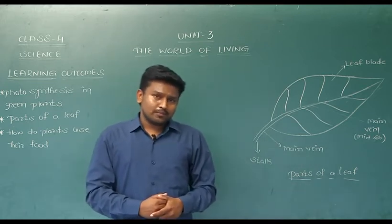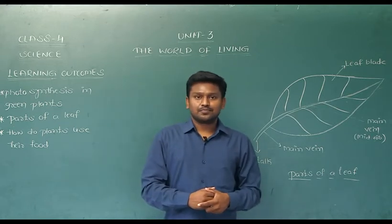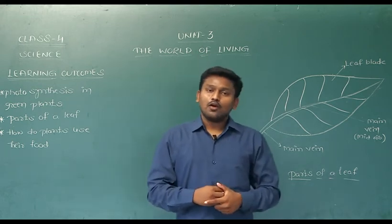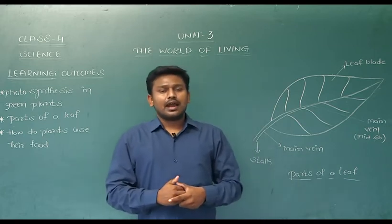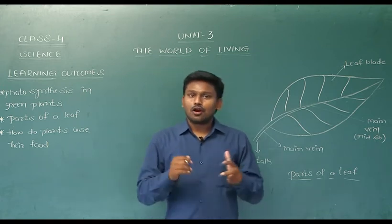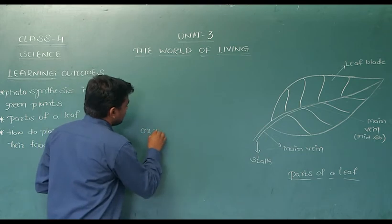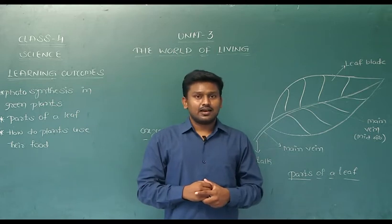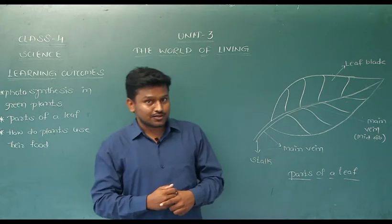We depend on plants, we already know that. But the point is, why we are depending on plants and what do we get from them. Some special materials from the plants and how they are so important to us. For example, oxygen. Oxygen is very, very important to survive for all living things. And during this pandemic, we have seen how important oxygen is for us.